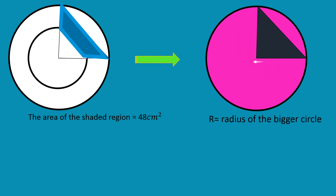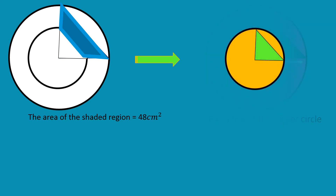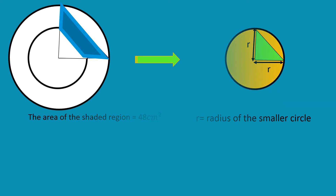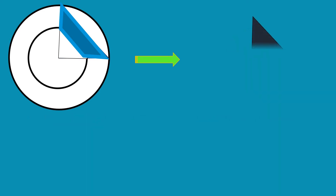Let us assume that the capital letter R is the radius of the bigger circle, and the small r is the radius of the smaller circle. The area of the shaded region can be computed by subtracting the area of the smaller triangle from the area of the bigger triangle.